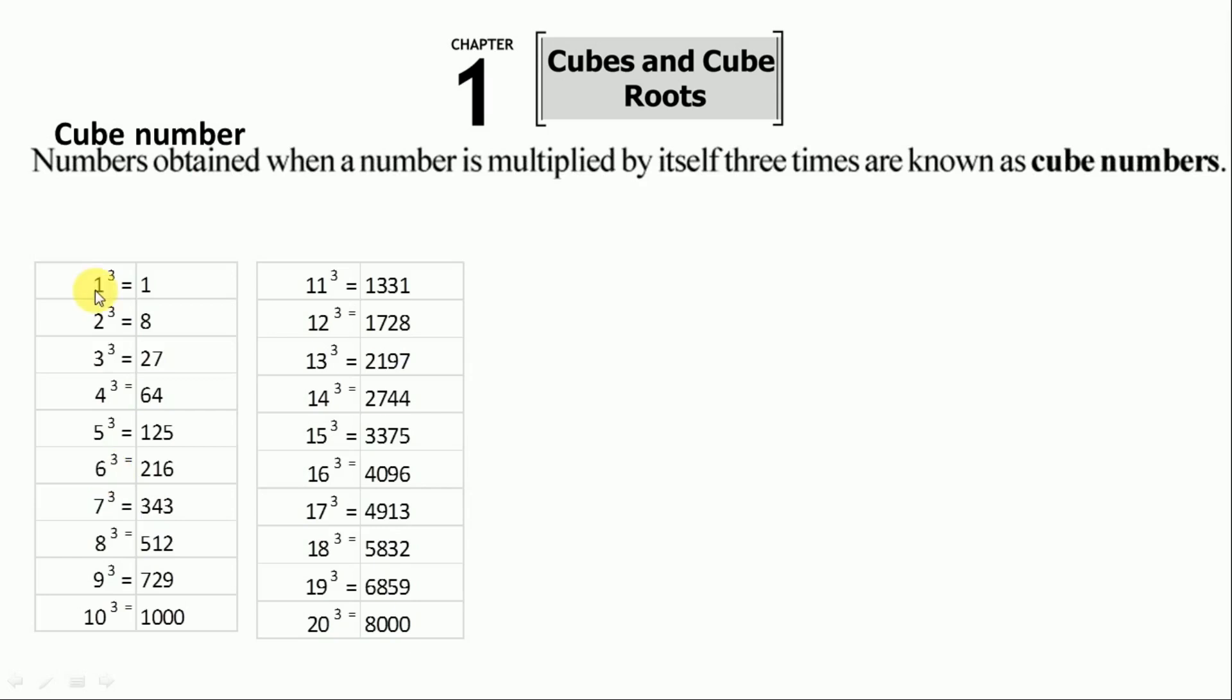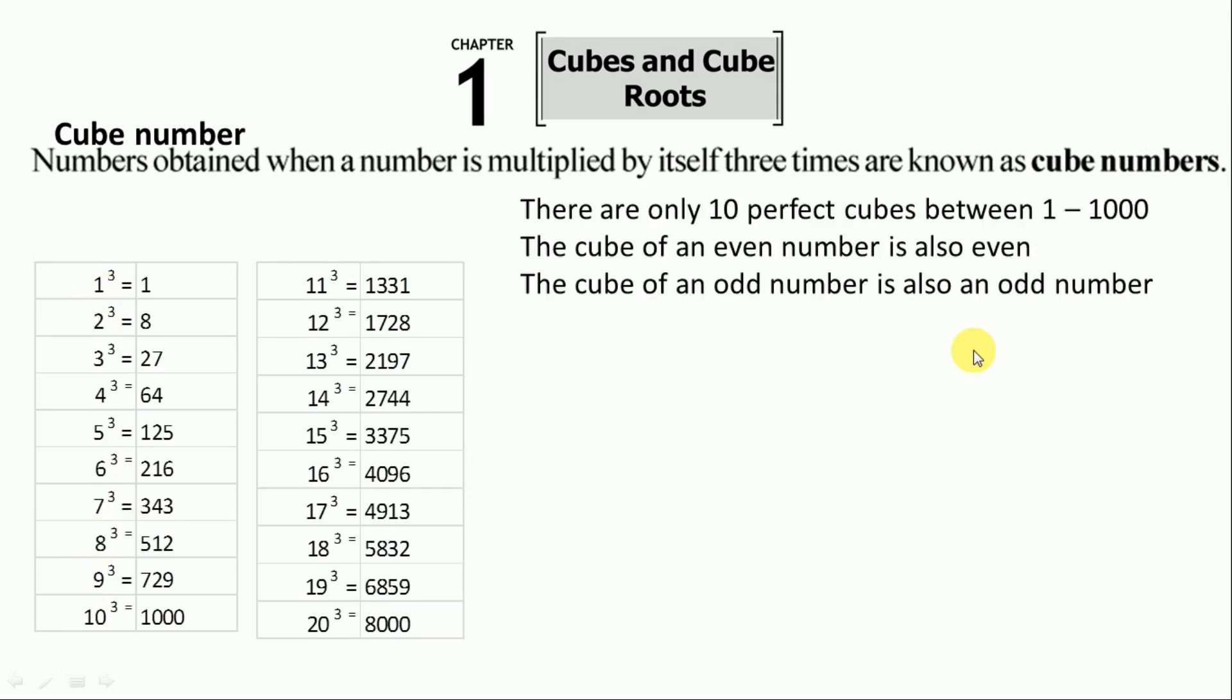Some important points about cubes of a number. See here, from 1 to 1000, only 10 perfect cubes are there. Next, the cube of an even number - see here, even number is 2 and cube of this number is also even.